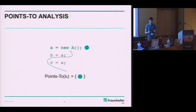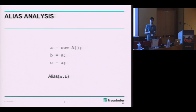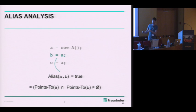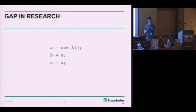In addition to points-to analysis, there are alias analyses. In alias analysis, you can query for two given variables in the program and you receive a Boolean answer to whether both variables alias. An alias analysis would walk backwards until it discovers B equals A and can directly stop and report that both variables alias — so they can sometimes be a bit more efficient. Importantly, from points-to information you can always derive alias information: query the points-to set for both variables, take the intersection, and if it's not empty, they alias.